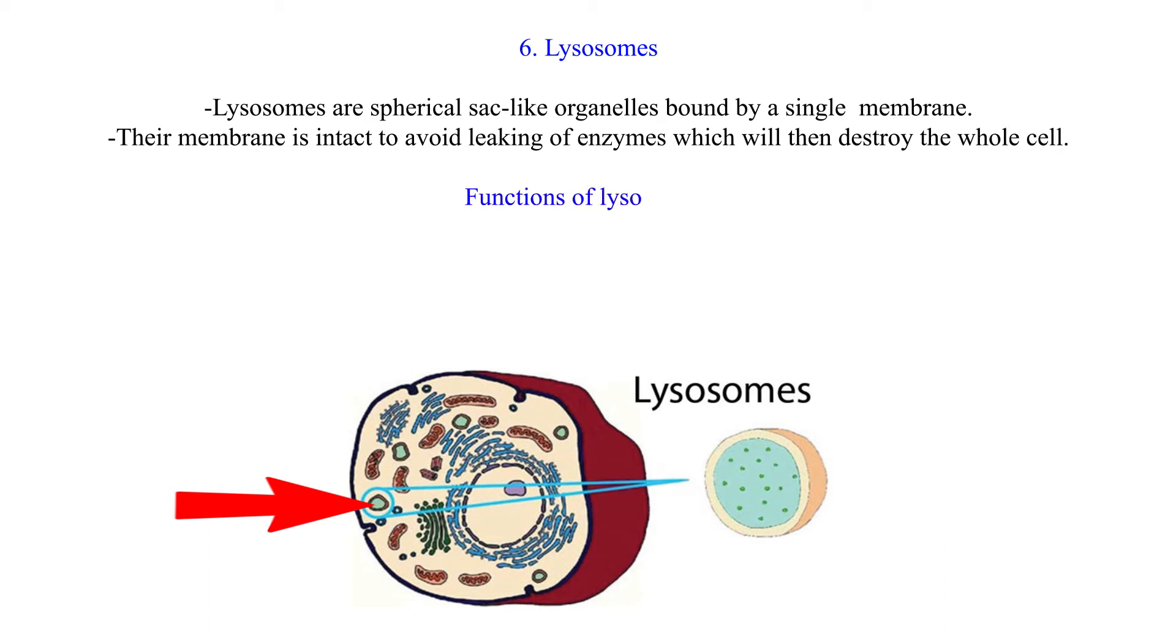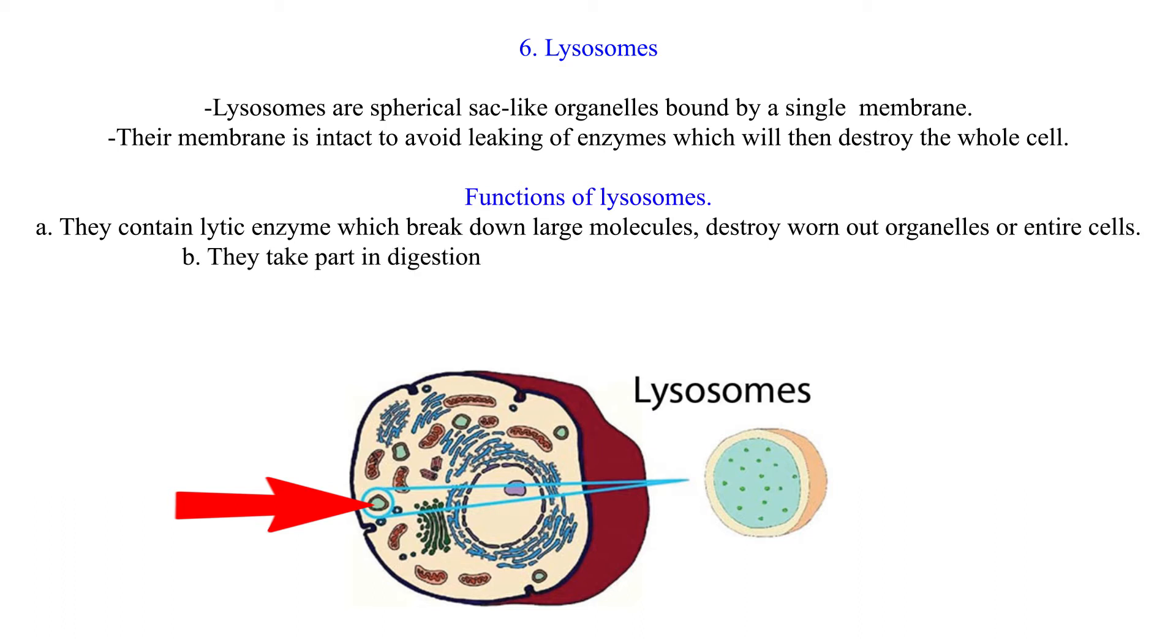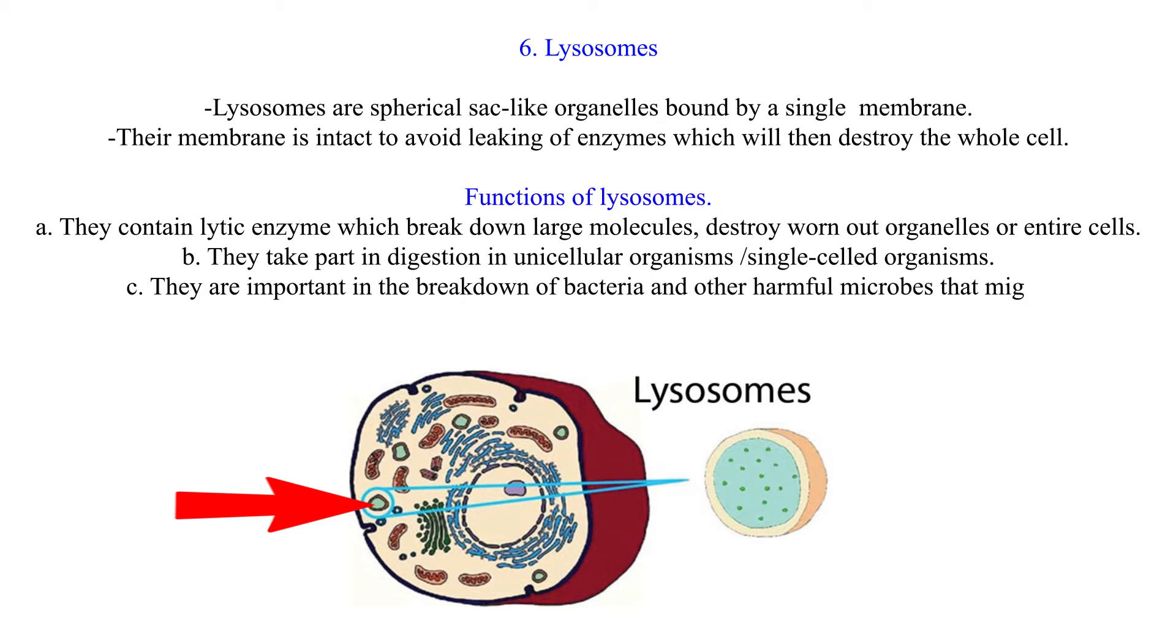Functions of lysosomes: A. They contain lytic enzymes which break down large molecules, destroy worn-out organelles or entire cells. B. They take part in digestion in unicellular organisms/single-celled organisms. C. They are important in the breakdown of bacteria and other harmful microbes that might have been ingested in food.